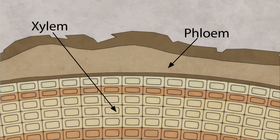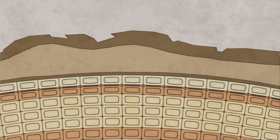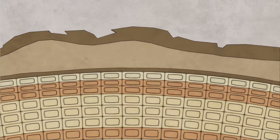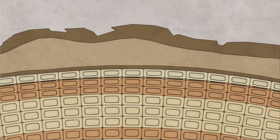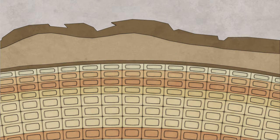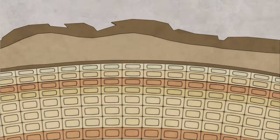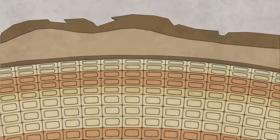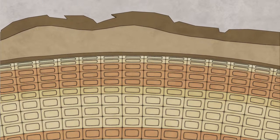As a layer of xylem tissue is added to the tree over the course of a growing season, the xylem cells change in size, structure, and color. This results in two differently colored bands of xylem tissue, and those colored bands represent one year of a tree's life. As those colored bands accumulate, counting them allows us to determine how old the tree is — its age.